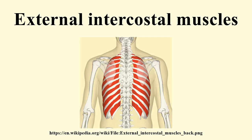The external intercostal muscles, or external intercostals, are 11 in number on either side. The muscles extend from the tubercles of the ribs behind, to the cartilages of the ribs in front, where they end in thin membranes.